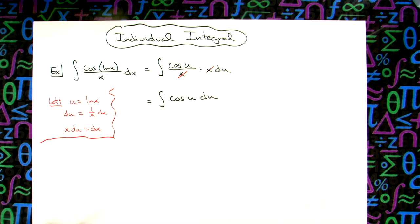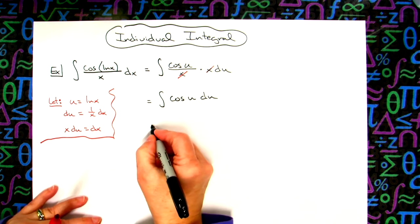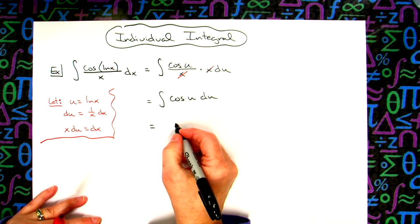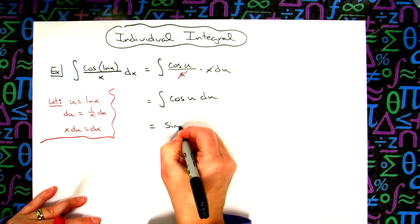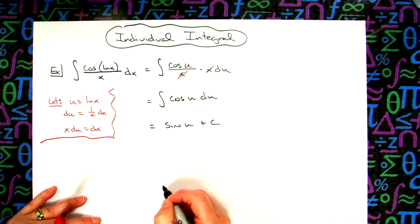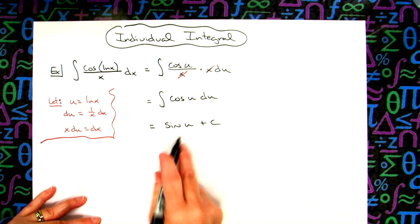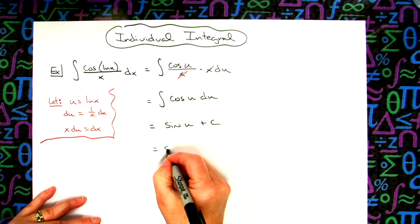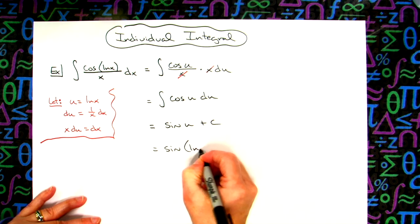We are all in terms of u, and now we can integrate this. Hopefully this is one that you have memorized. When you integrate cosine, you get sine u plus c, and then the last step would be to replace that u. So then we'll have sine natural log of x plus c.